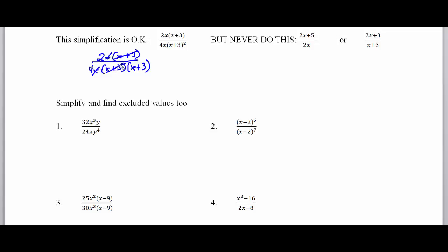Canceling may be said and I might even use that word later in these videos, but what I really mean is to simplify. Now what I have in my numerator is 2 times 1 times 1, and 4 times 1 times 1 times x plus 3. The 2 and the 4 can both be divided by 2, which gives us 1 half — 2 goes into 2 once and 2 goes into 4 twice. So my numerator is 1 and my denominator is 2 times x plus 3. This is fully simplified.